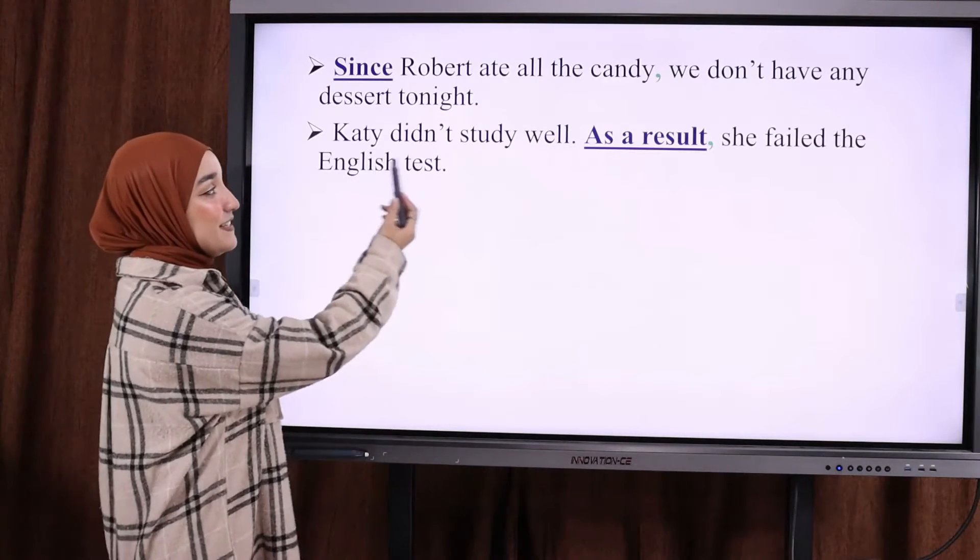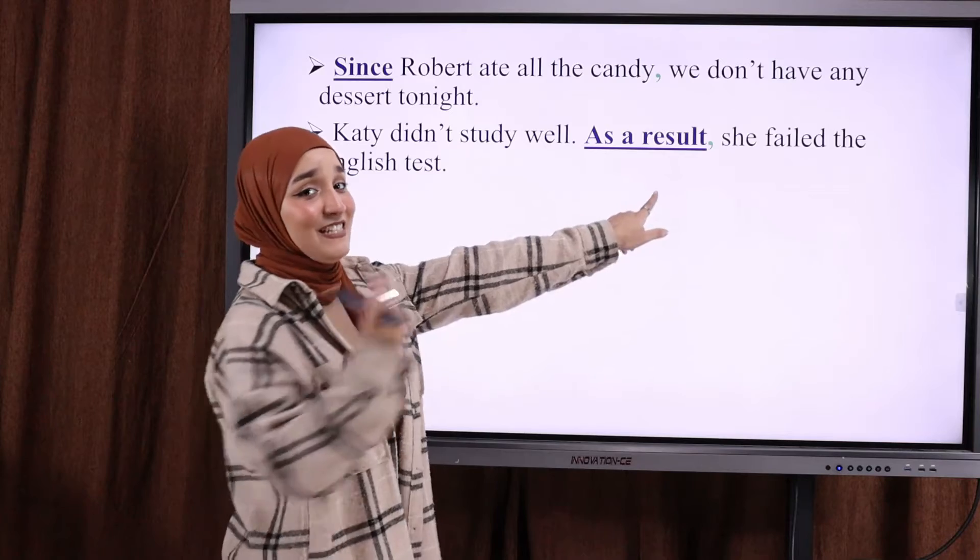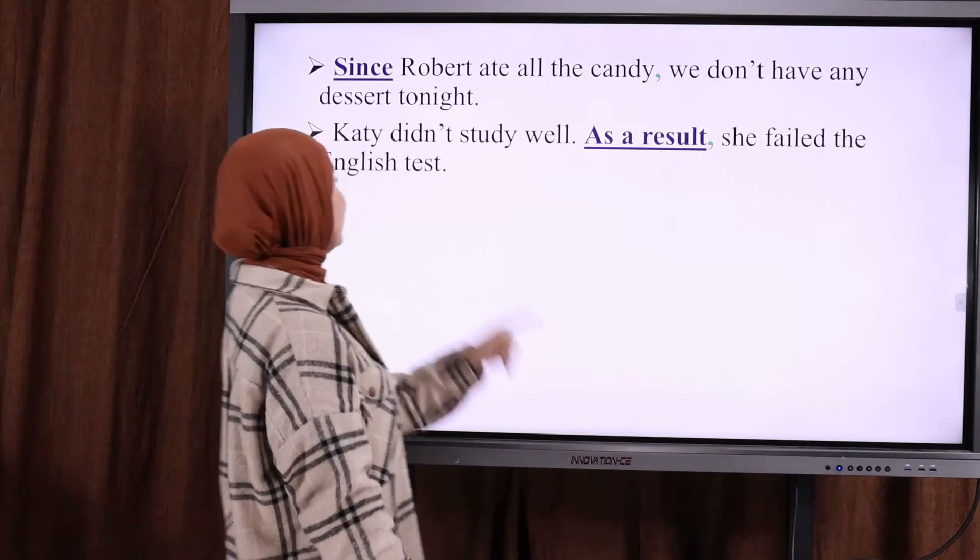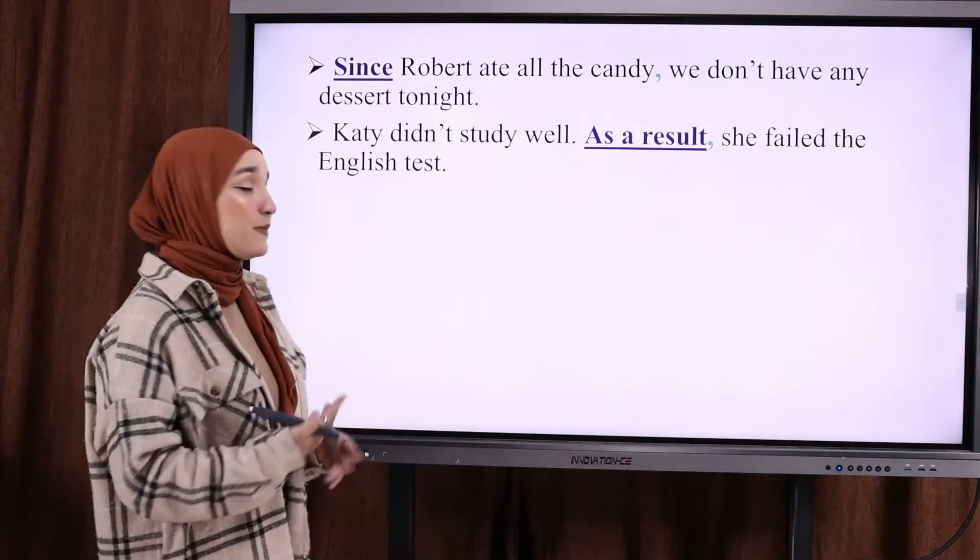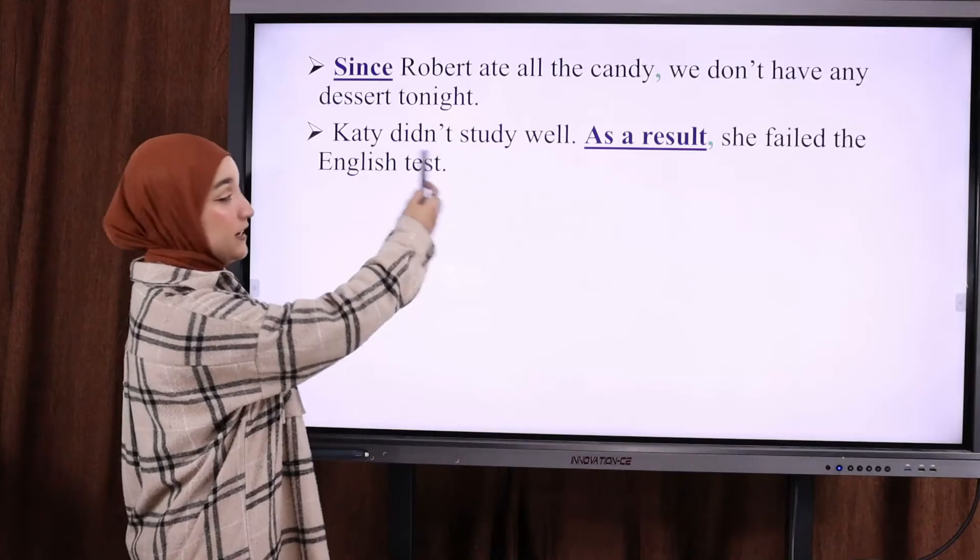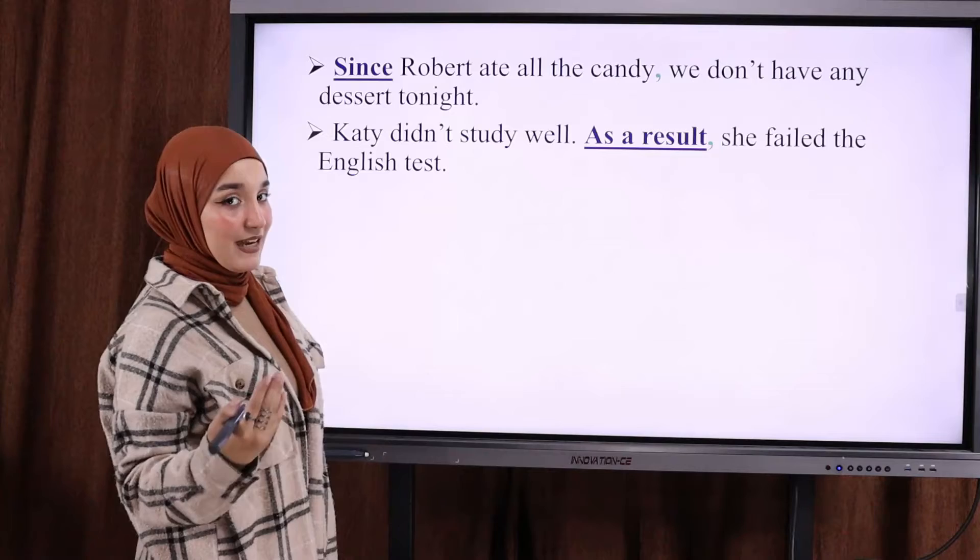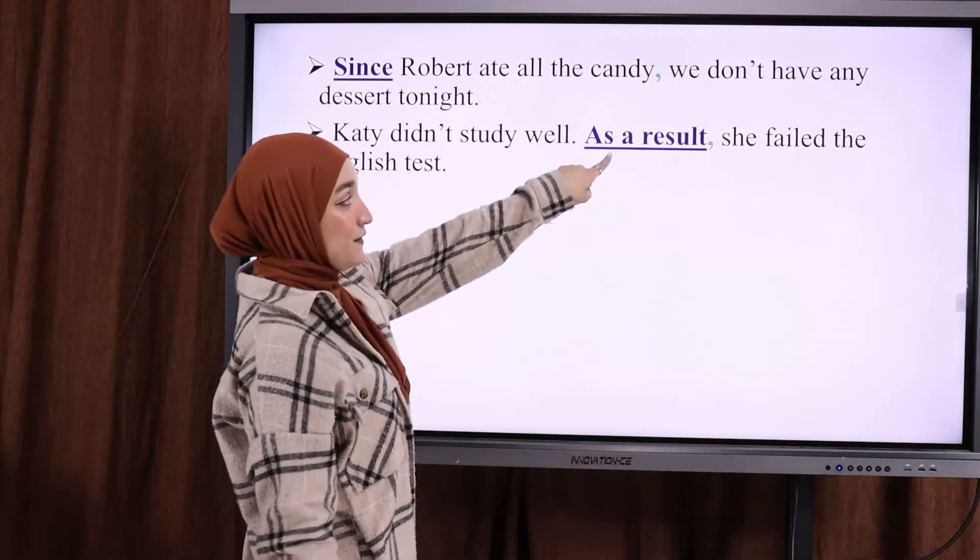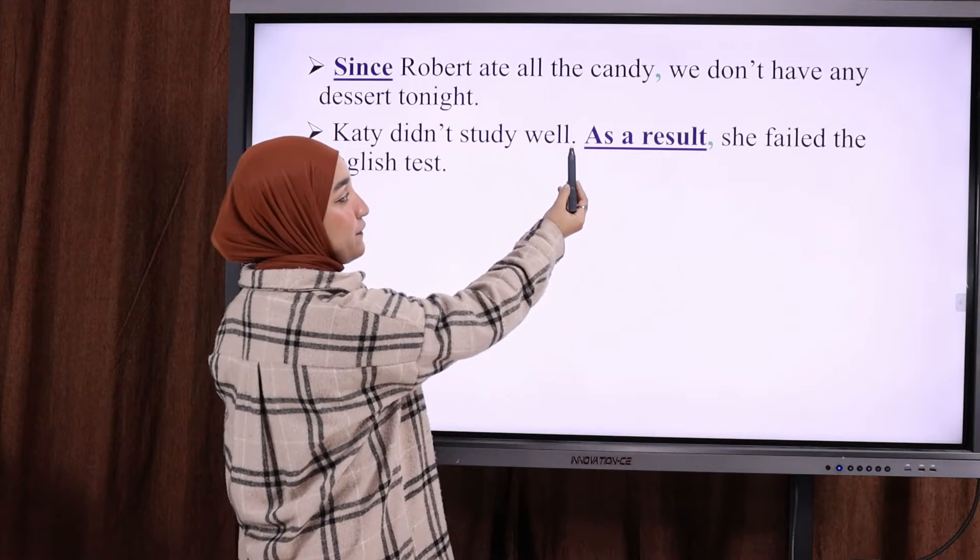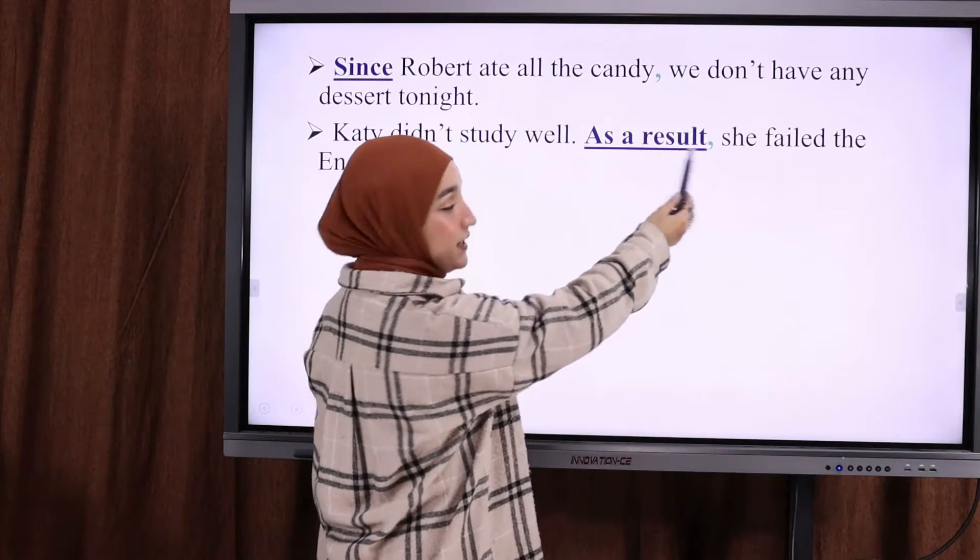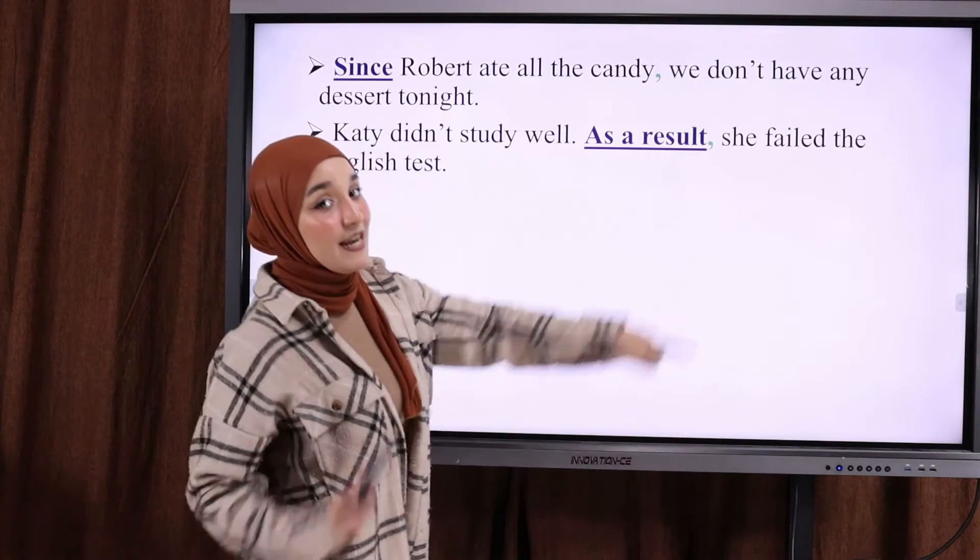Another example. Katie didn't study well. As a result, she failed the English test. Why? She didn't study well. So, I did not start with the connector. I put it in the middle. As a result here comes after a full stop. After you put as a result, you have to put a comma.